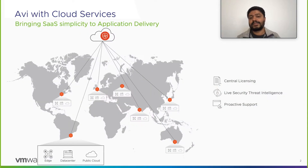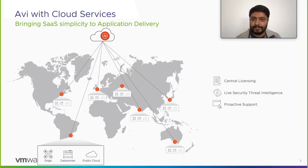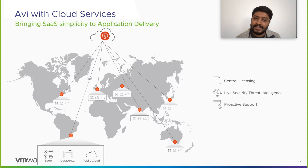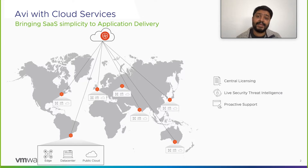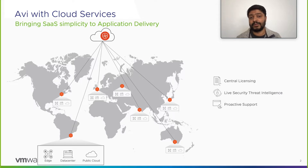Avi with Cloud Services is a SaaS platform which delivers value-added services to Avi controller deployments. Today there are three major services available to be deployed: central licensing, which provides seamless capacity management to Avi controller clusters; live security threat intelligence, which provides a real-time security threat feed for various security threat sources to protect applications; and proactive support, which enables zero-touch support for customers, enabling operational simplicity for all registered Avi controller deployments.